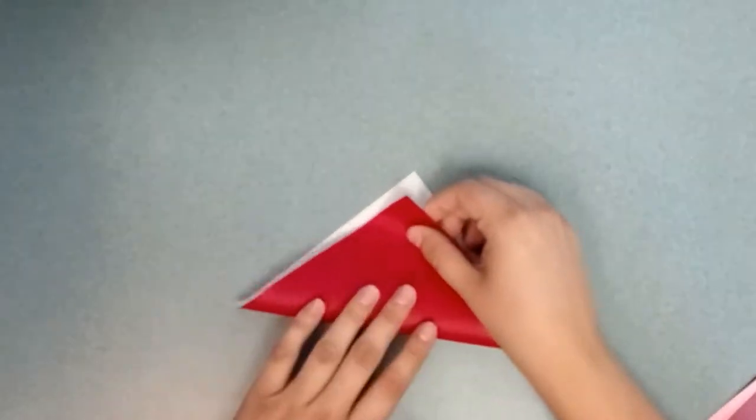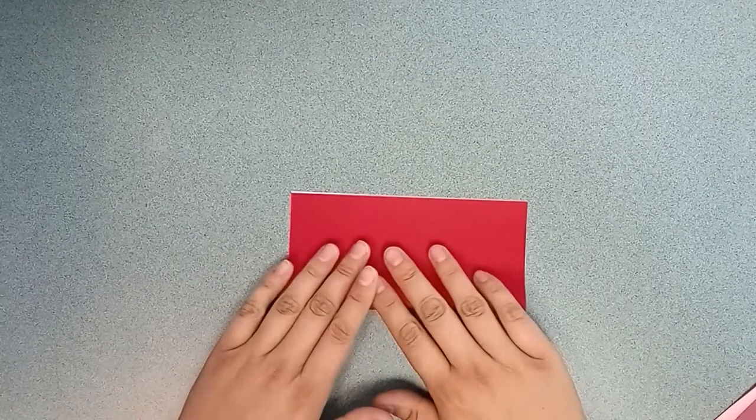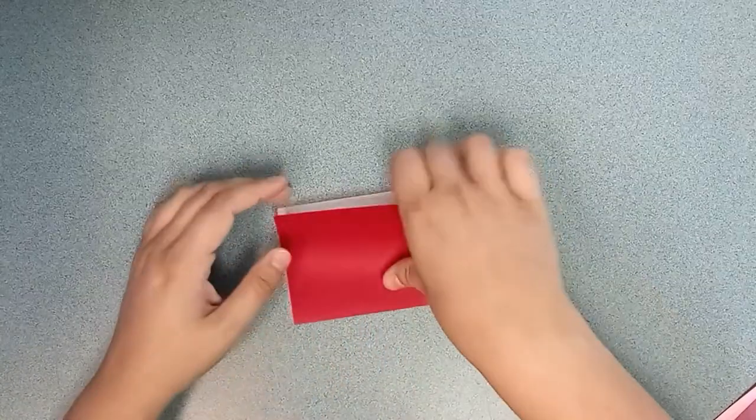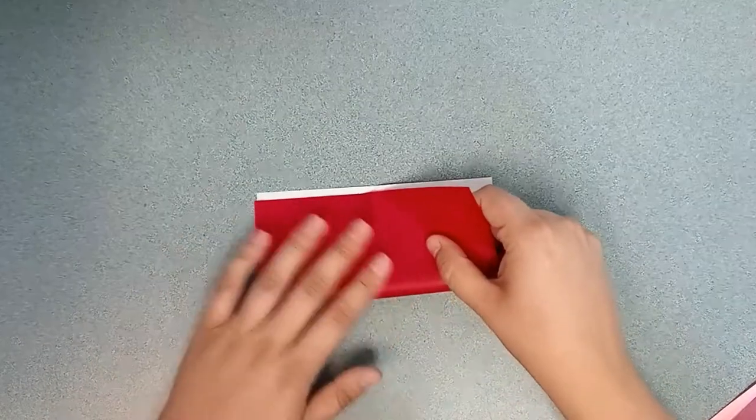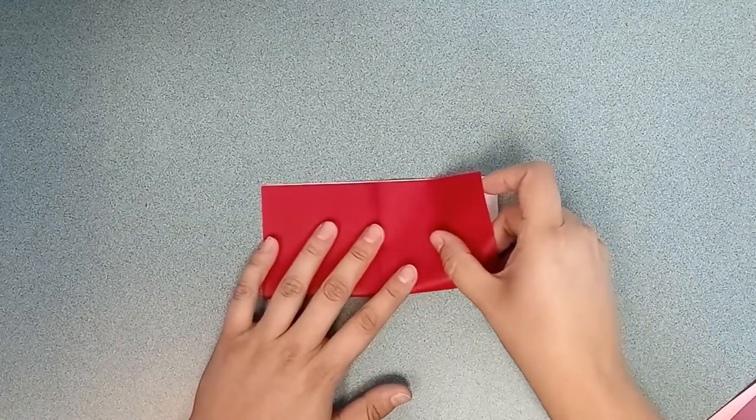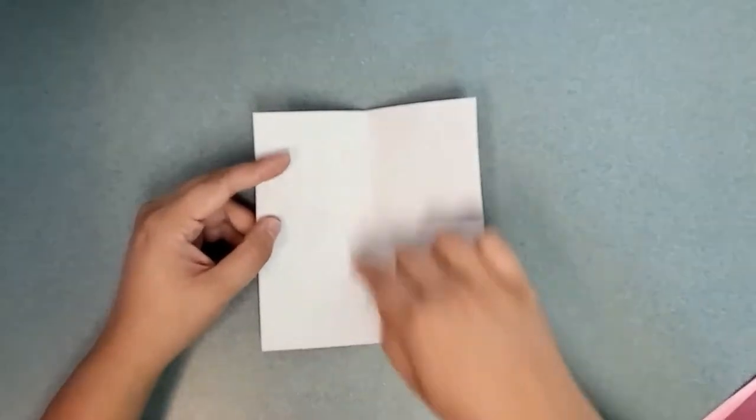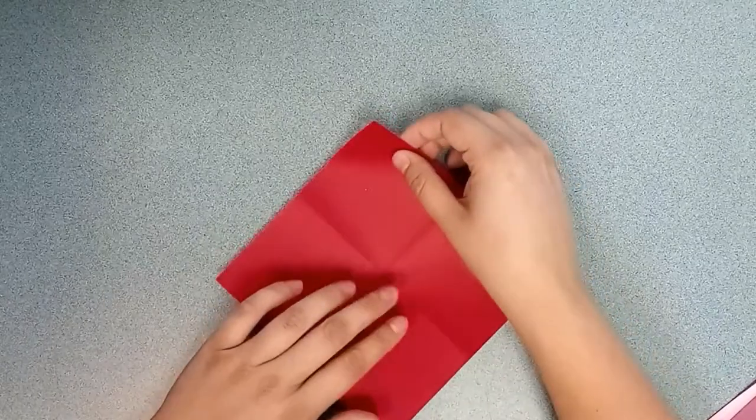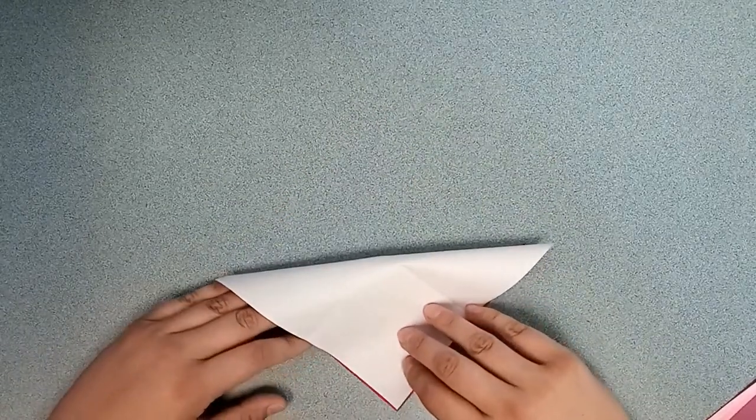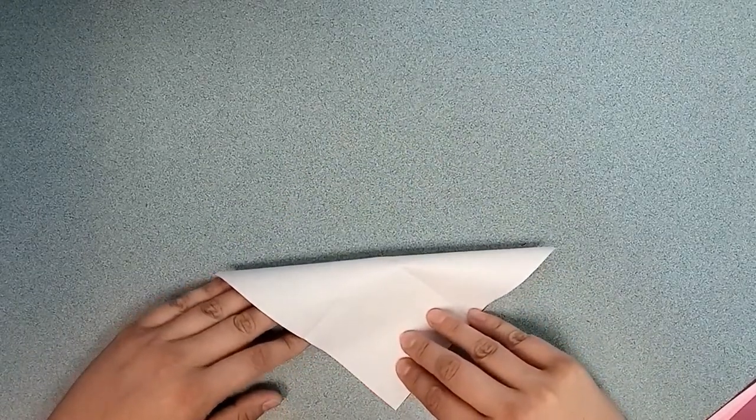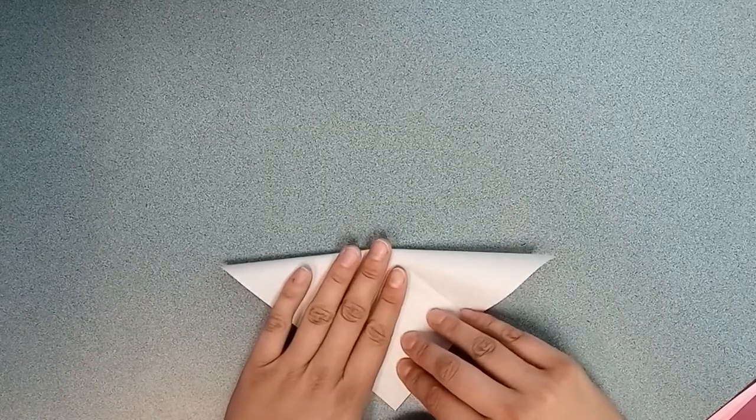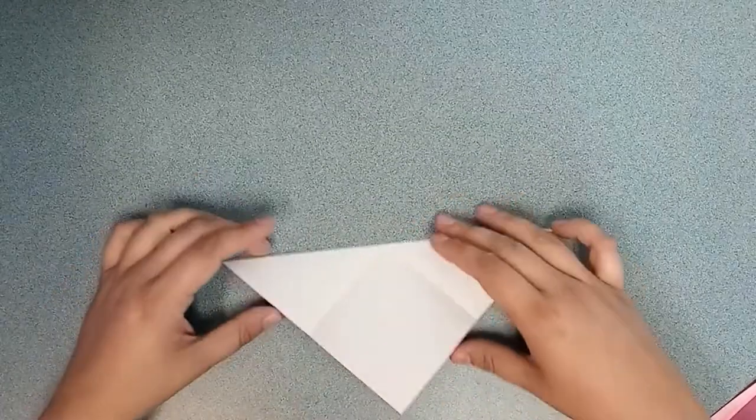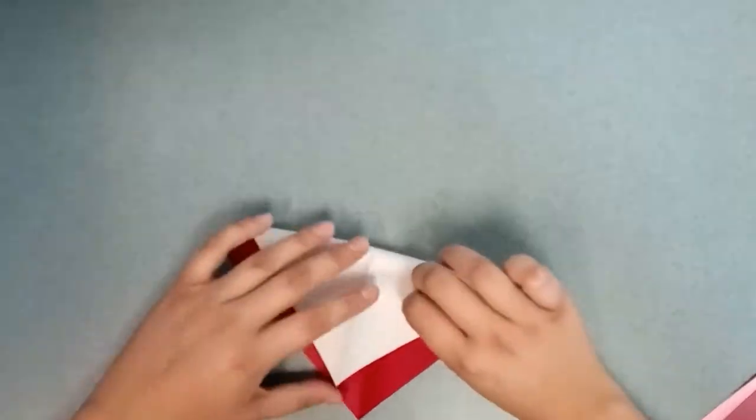So you start with your piece of paper and you fold it in half this way, and then you fold it in half the other way so that when you open it, you have this cross seam. And then you flip it over and you fold it in half on a diagonal, and then you open it again and do it the other way.